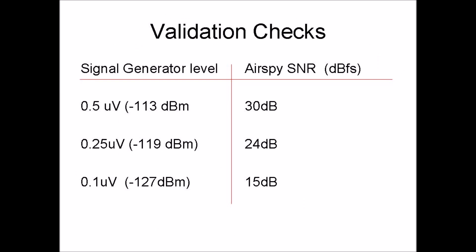To try and get some validation of this calculation, I took a couple of spot checks. With the generator set to one-half microvolt or minus 113 dBm, the peak on AirSpy measured 30 dB above the noise floor.